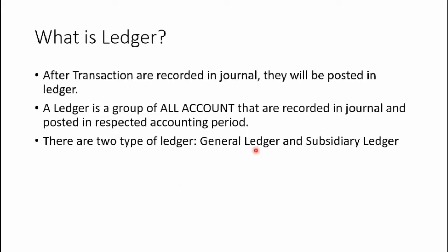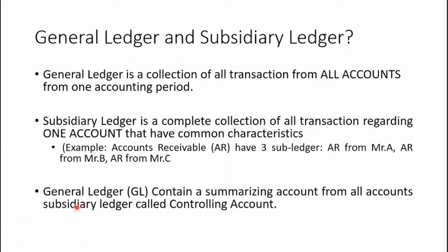There are two types of ledgers: the first is general ledger and the second is subsidiary ledger. General ledger is a collection of all transactions from all accounts in one accounting period — 'all accounts' is the keyword here. So when we talk about ledger in general discussion, we usually discuss the general ledger, which is a compilation of all transactions from all accounts in one accounting period.